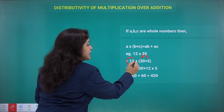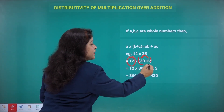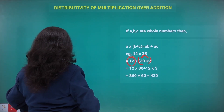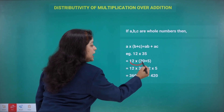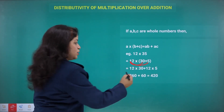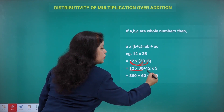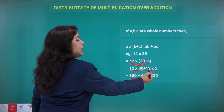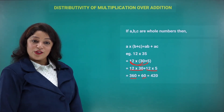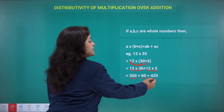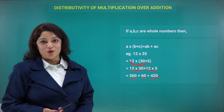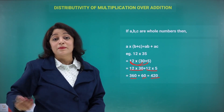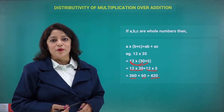Since 12 is getting multiplied by (30 + 5), we multiply 12 by 30 and 12 by 5. So 12 times 30 gives you 360, and 12 times 5 gives you 60. Then 360 plus 60 gives you 420. Isn't it easy? You can multiply very big numbers by splitting them this way.